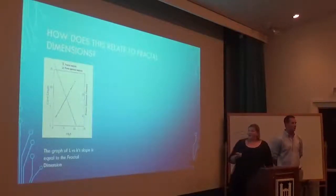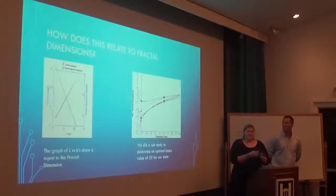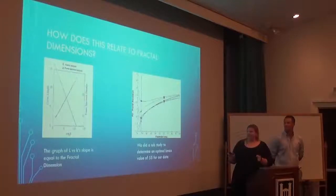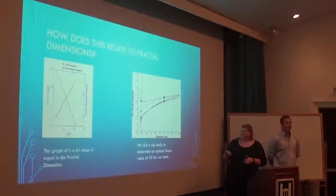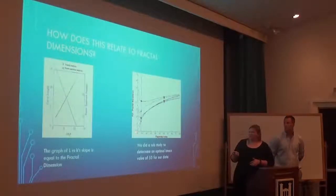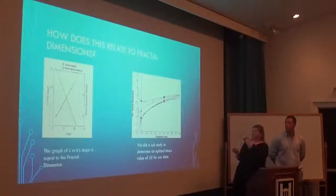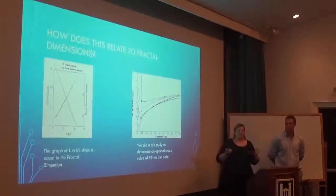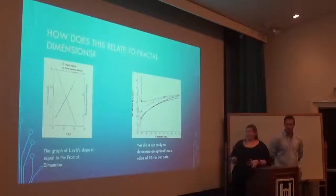We did a sub-study to determine our optimal K_max. As you increase the number of K values, the slope or fractal dimension changes. Starting with smaller K_max values, the change in slope increases drastically, but as you get to larger K_max values, it starts to level off and the difference in fractal dimensions becomes insignificant. That is how you optimize your K_max. We decided to use 55 as our maximum ruler size for our data.